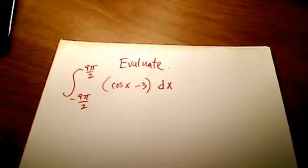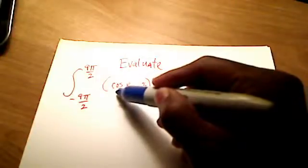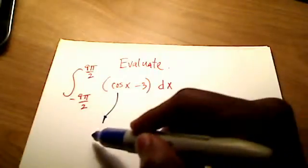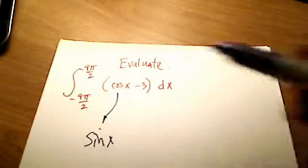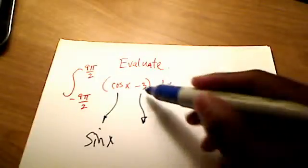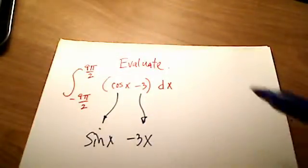But let's start off by finding the antiderivative of cosine x. Well, that's easy enough, right? Sine - the derivative of sine would get you back to cosine here. And the antiderivative of negative 3 is negative 3x.